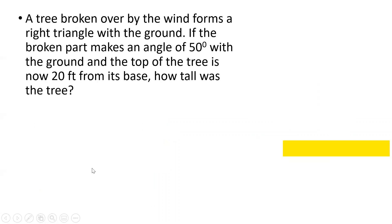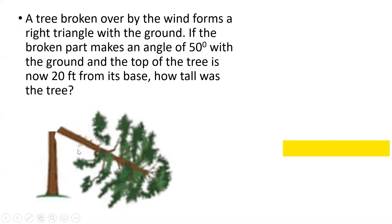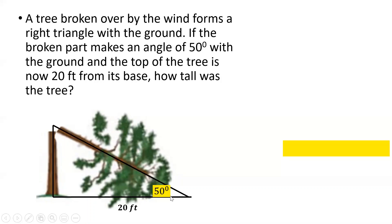Example number four: a tree broken over by the wind forms a right triangle with the ground. The broken part makes an angle of 50 degrees with the ground, and the top of the tree is now 20 feet from its base. How tall was the tree? We need to find both the standing portion and the broken portion of the tree, then add them — calling them y and x respectively.